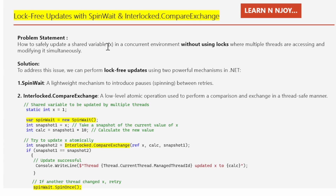To address this issue, we can perform lock-free updates using two powerful mechanisms available in .NET. Number one: SpinWait — a lightweight mechanism to introduce pauses, that is spinning between retries. Picture this as a brief, polite pause that happens between retries. When a thread finds that the shared variable has been modified by another thread, instead of blocking or waiting for a lock to be released, it simply spins for a moment. This lightweight pause keeps the system efficient, allowing the thread to check again if it's safe to update.